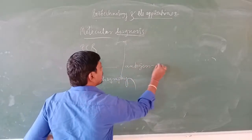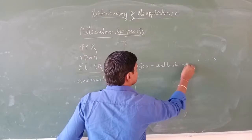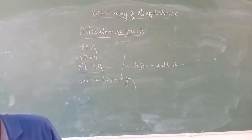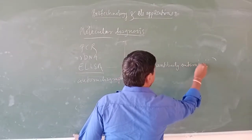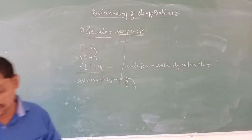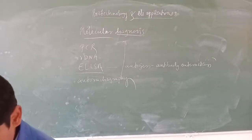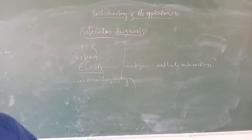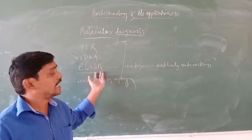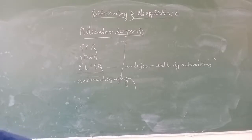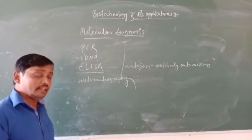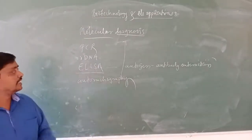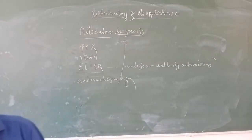ELISA is based on the principle of antigen-antibody interaction. Infection by a pathogen can be detected by the presence of antigens from the pathogen using ELISA, which identifies proteins or glycoproteins. It can also detect antibodies synthesized by our body against that pathogen.